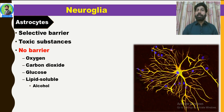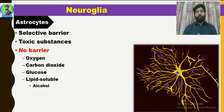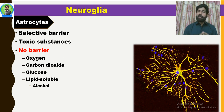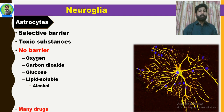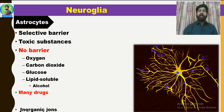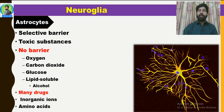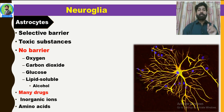Lipid-soluble substances can also cross, and especially alcohol. Certain drugs, inorganic ions, and amino acids can also reach the brain, but through a very slow process.